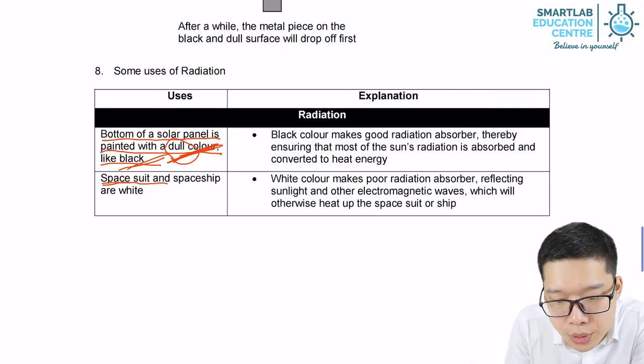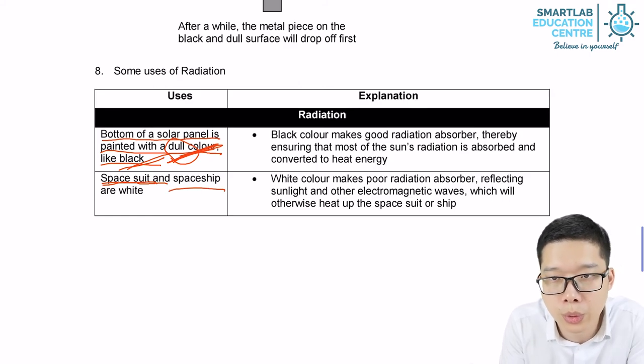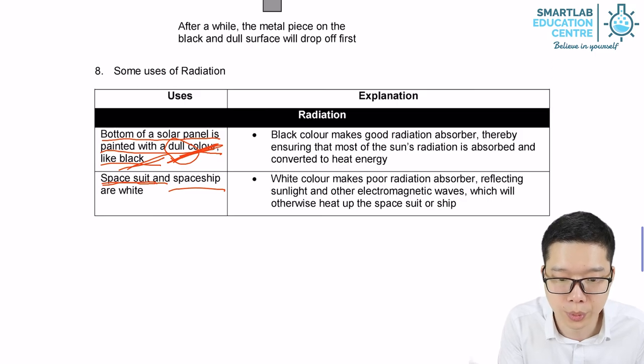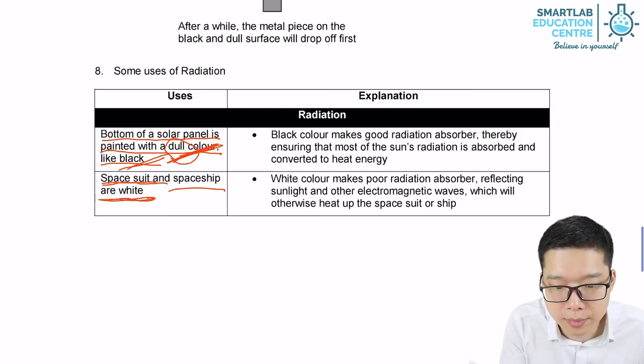Another example, space suit, space ship. We don't want them to absorb so much heat, so much sunlight. So we always color them in gray color or white color.